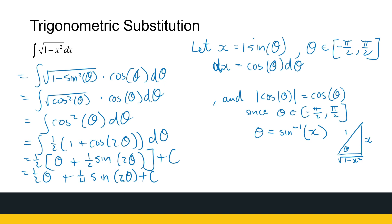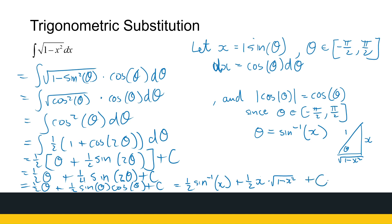We still need to handle the sine 2 theta term. Since 2 theta is not directly in the triangle, we use the identity sine 2 theta equals 2 sine theta cos theta, turning one quarter sine 2 theta into one half sine theta cos theta. Substituting back: theta is arc sine x, sine theta is x, and cos theta is the square root of 1 minus x squared. So the final answer is one half arc sine x plus one half x times the square root of 1 minus x squared plus c.